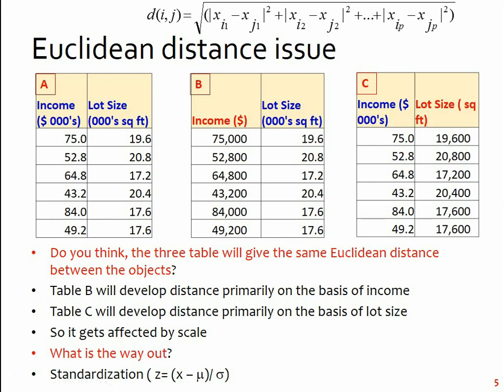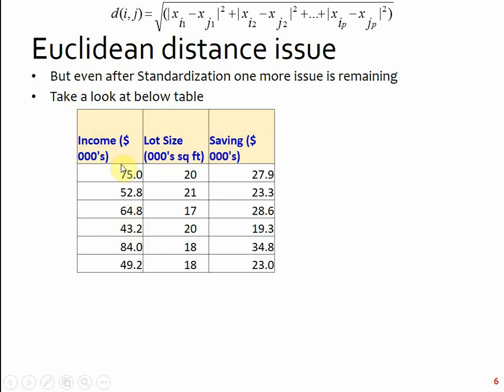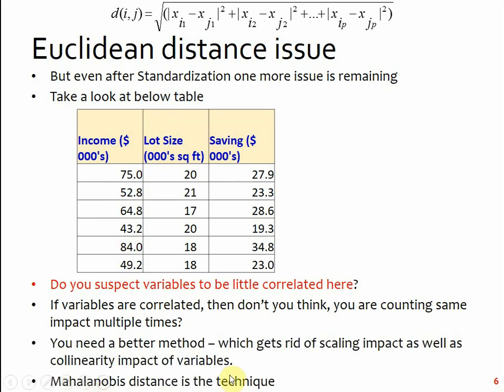But still there is one more issue. The issue is that if the three variables are, some variables are collinear, means they are linked. Like in this case, probably saving and income are collinear. Don't you think you're trying to measure the distance where there is one variable that is getting counted, the impact is getting counted twice. What is the way out? And that way out is actually Mahalanobis distance, which gets rid of scaling impact as well as the collinearity impact of variables.